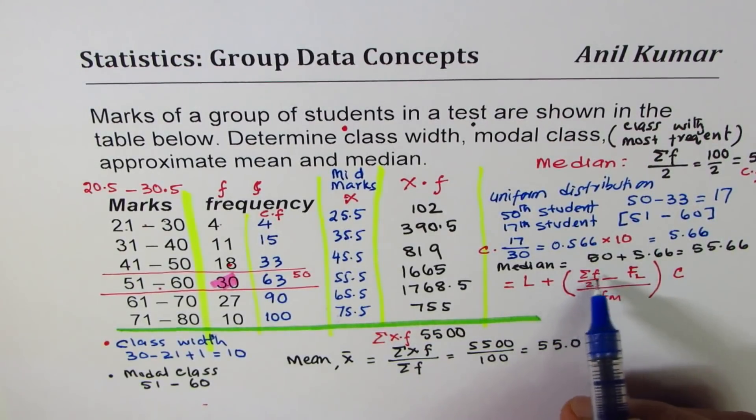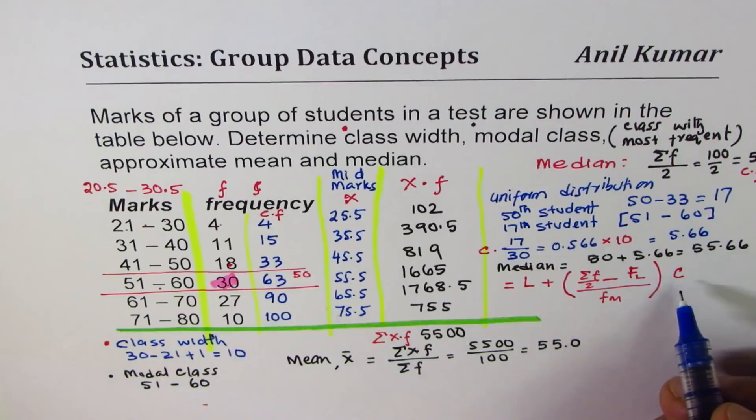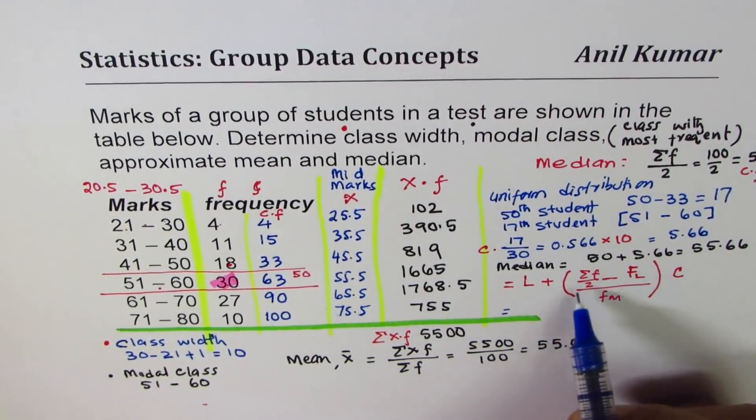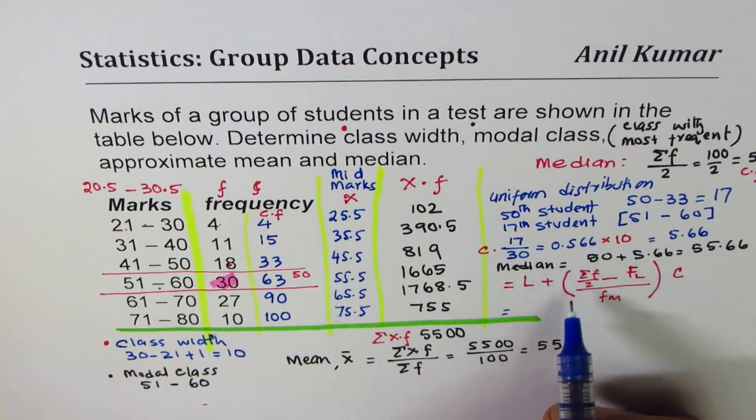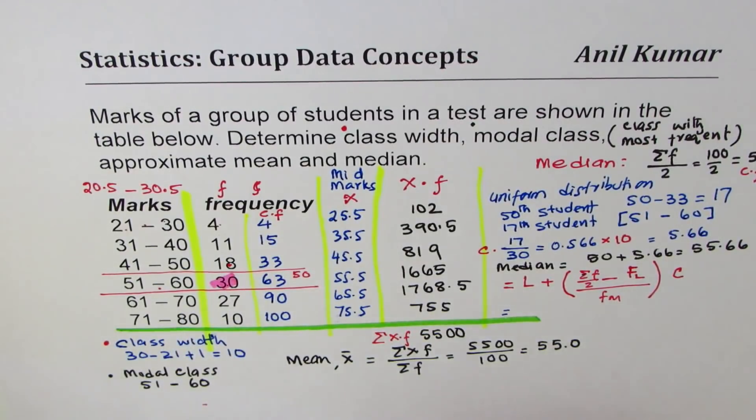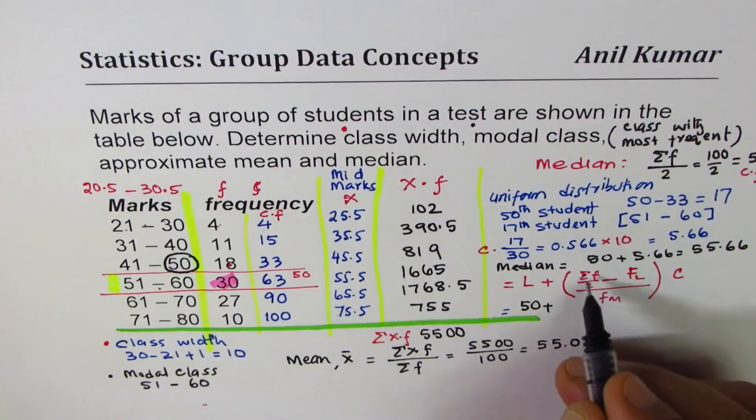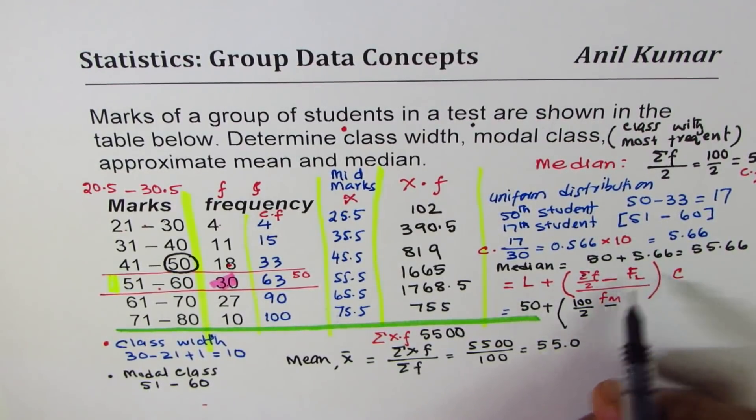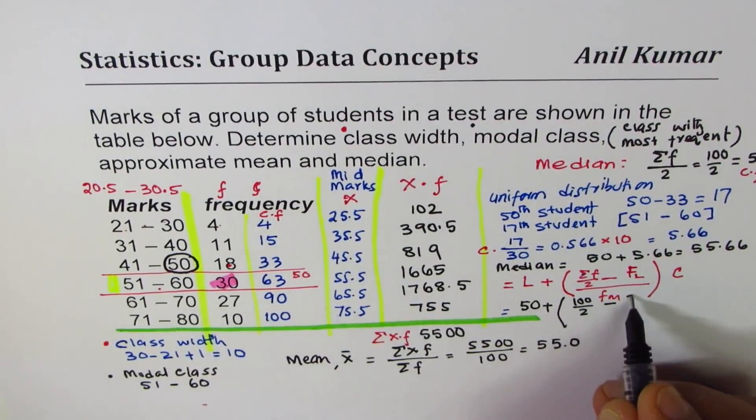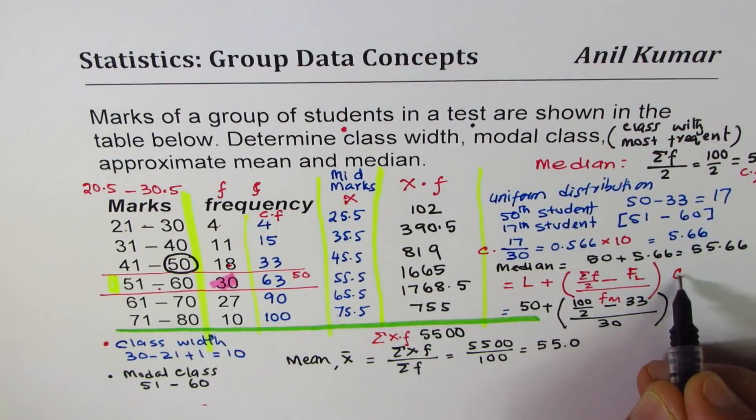You could use this formula. Let's substitute the values. C we know is 10. To find this lower limit we actually find the sigma F by 2, where will the median lie? Which we found was 50. So it lies in this group. So L is 50 for us. So we can write L = 50 plus sigma F by 2. Sigma is 100 divided by 2 minus FL is the cumulative frequency before this group which is 33, divided by the frequency which was 30, times class interval of 10.